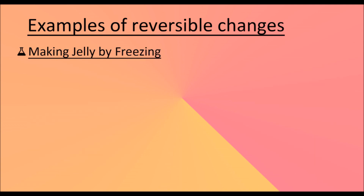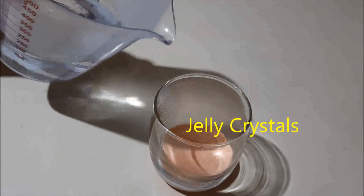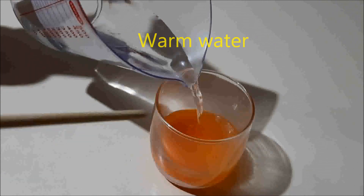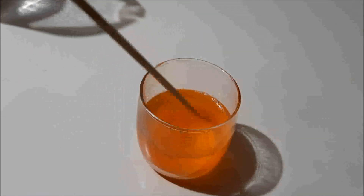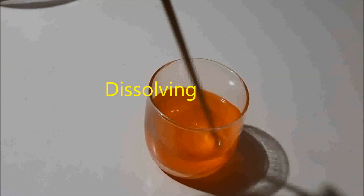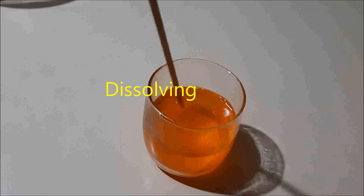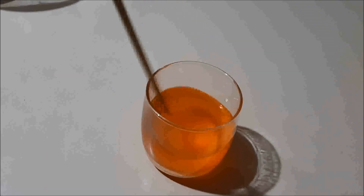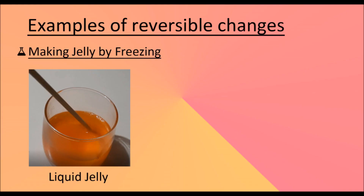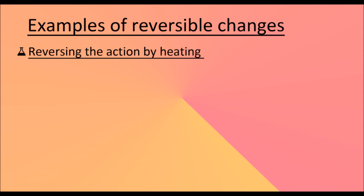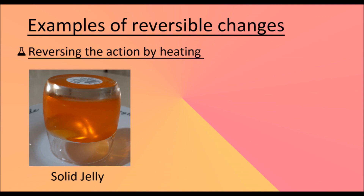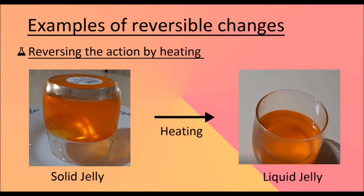Making jelly by freezing. You can freeze a mixture of liquid jelly and turn it into solid jelly. If you keep solid jelly outside the fridge for some time, you can get liquid jelly back. Cooling produces solid jelly; reversing the action by heating turns solid jelly back into liquid jelly.